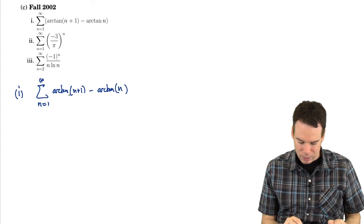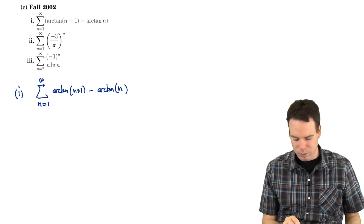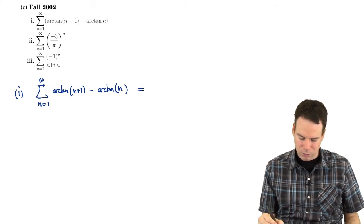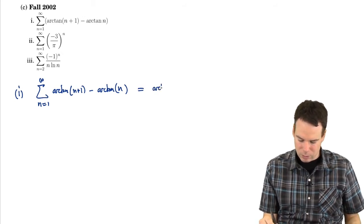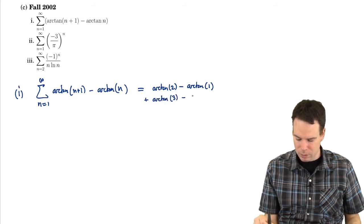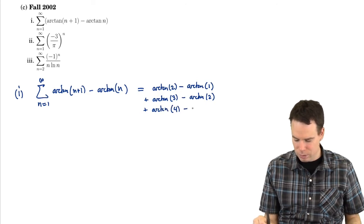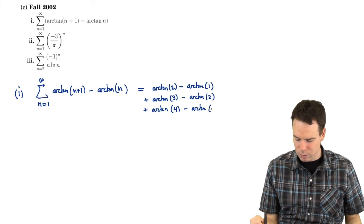So in this case I can use the fact that one arc tan is just the other one shifted slightly. So if I write out the first few terms, this is arc tan of 2 minus arc tan of 1 plus arc tan of 3 minus arc tan of 2 plus, and it seems to have this pattern here, arc tan of 4 minus arc tan of 3.